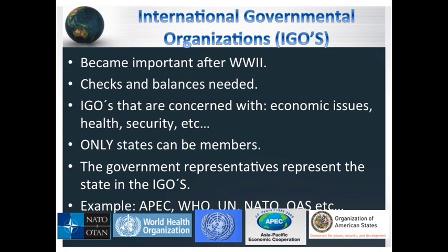The second type of international actor is international governmental organizations, or IGOs. They became important after World War II, when it was recognized that checks and balances were needed. IGOs are normally concerned with economic issues, health, security, and social issues that were a big problem right after World War II. Only states can be members — if you don't have all five components to be recognized as a state, you cannot be part of an IGO.